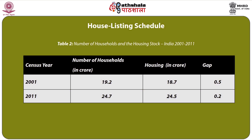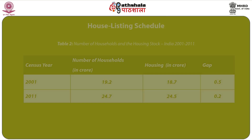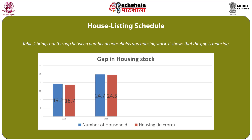Table 2 covers the number of households and housing stock for 2001 to 2011. The number of households in crores was 19.2 in 2001 and increased to 24.7 in 2011, while housing stock went up from 18.7 to 24.5. The gap between number of households and housing stock was 0.5 in 2001, which has reduced to 0.2 in 2011, indicating that the gap is reducing as shown in the accompanying graphs.